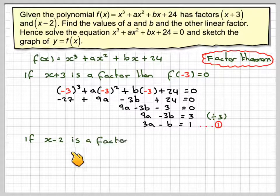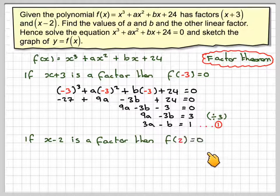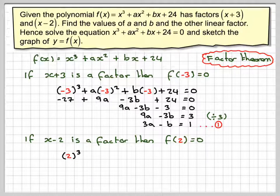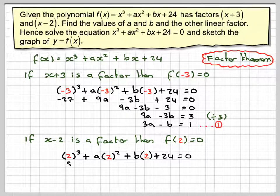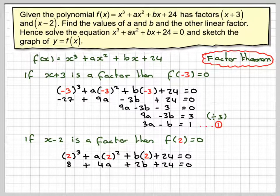Now, if x - 2 is a factor, then f(2) would be equal to 0 because of the factor theorem. So we've got 2³ + a(2²) + b(2) + 24 = 0. 2 cubed is 8, 2 squared is 4, so +4a + 2b + 24 = 0.